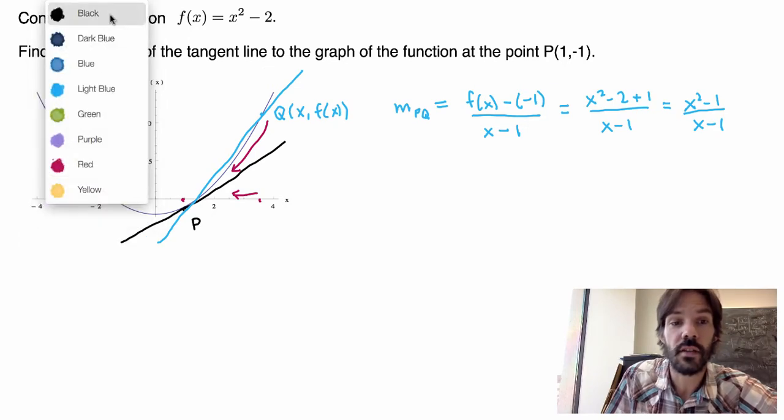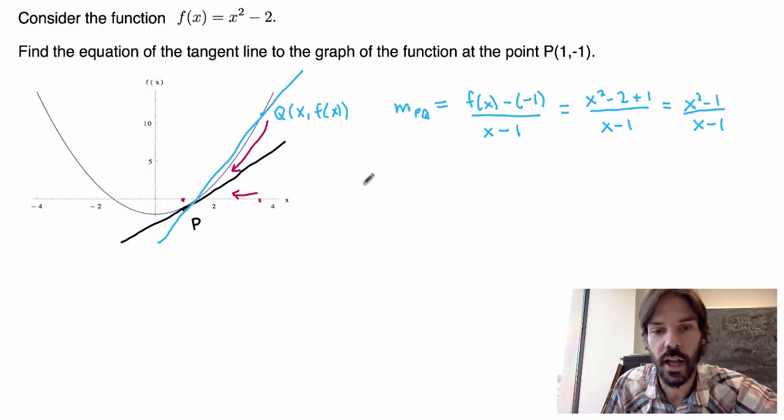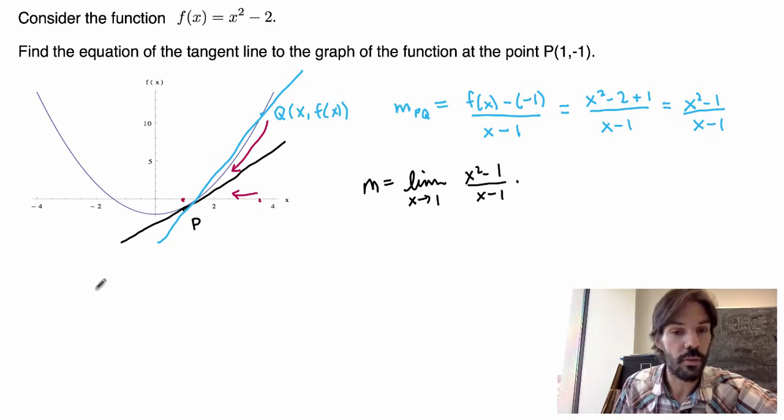And from this, I'll get the slope of my tangent line, which I call m. So the slope of the tangent line will be the exact same thing here, but taking the limit where I send the x coordinate very close to 1. So I can write this as the limit as x goes to 1 of (x² - 1)/(x - 1). Now, how is that related to the derivative?